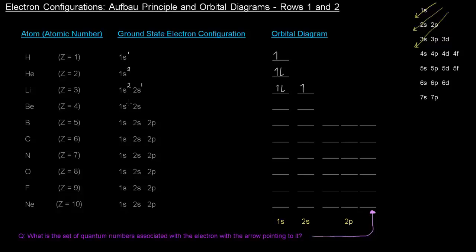Beryllium, four electrons, so 1s2, 2s2. And so now the 2s orbital is filled in addition to the 1s orbital.